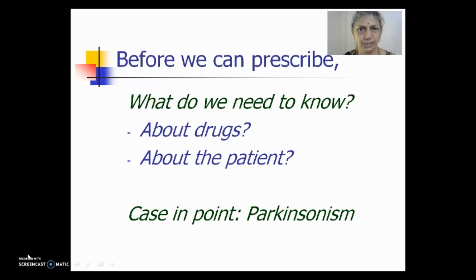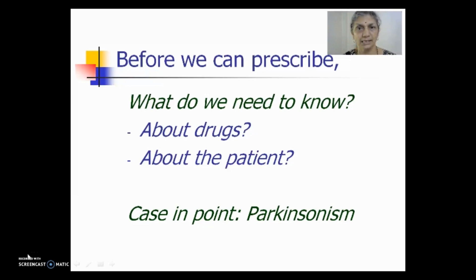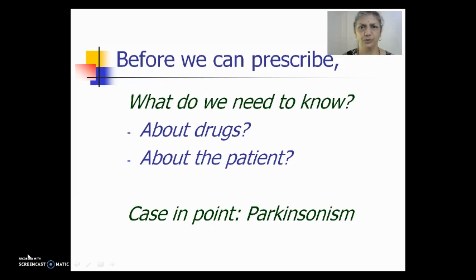By studying the kinetics of dopamine — absorption and distribution, both lacking — we realize dopamine is useless in treating Parkinsonism. By studying that levodopa is absorbed, distributed, and biotransformed into dopamine in the brain, we recognize its clinical benefit. By understanding the mechanism of nausea and vomiting and studying carbidopa's pharmacodynamics — it prevents conversion of levodopa to dopamine — and its pharmacokinetics — absorbed orally but does not cross the blood-brain barrier — we could safely combine it with levodopa to minimize adverse effects, reduce the dose requirement, and achieve better clinical benefit.